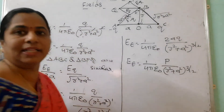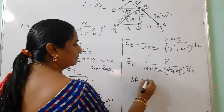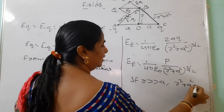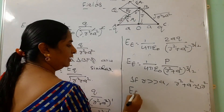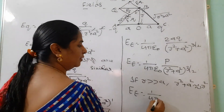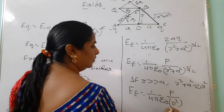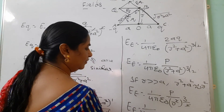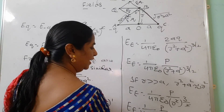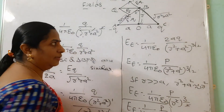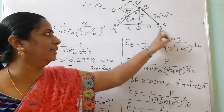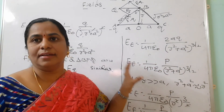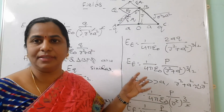We can finish here, or take one more step: if R >> A, then R²+A² ≈ R², so (R²+A²)^(3/2) ≈ R³. Therefore the intensity on the equatorial line simplifies to E = (1/4πε₀) × P/R³. Remember: the product of charge and distance between the two charges is called the electric dipole moment, represented by P.